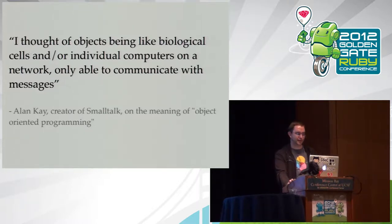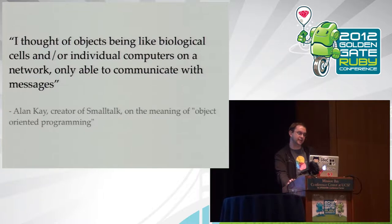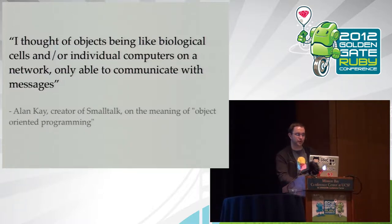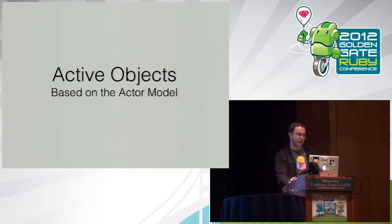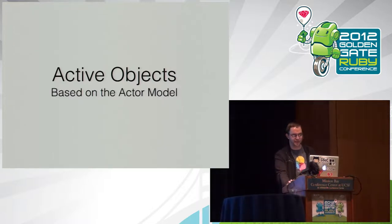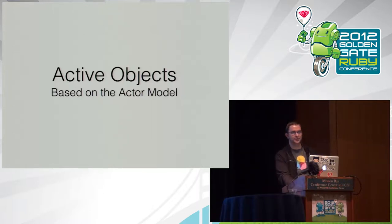What Celluloid does is combine object-oriented programming and the actor model, and I think these things go together like peanut butter and chocolate. This is my favorite quote from Alan Kay — I put it in probably half the talks I've ever given. When I read this, what I think is that object-oriented programming should be a natural way to do concurrency. Alan Kay thinks of objects as being like servers or biological cells.